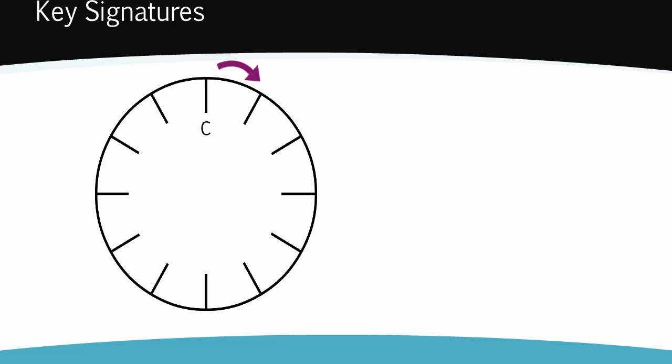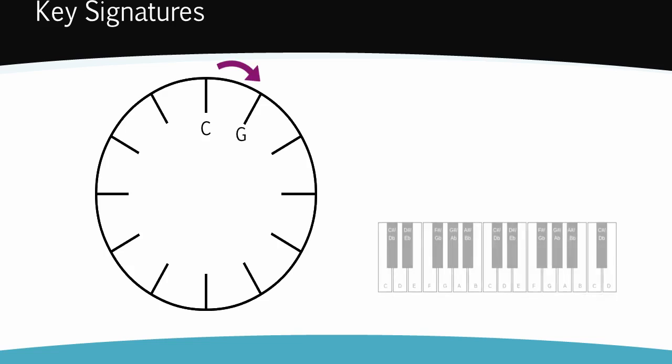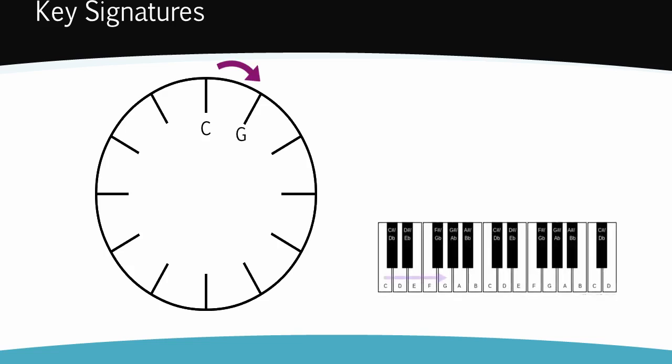Now moving around the clock in a clockwise direction, the next key is G major. G is a perfect fifth higher than C, or seven semitones or half steps higher. Each step on the circle as you go round will be a perfect fifth or seven semitones higher than the last one. On this side of the circle, we will only be using white notes, so notes without any accidentals added.